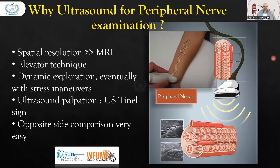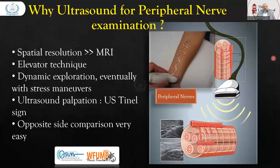Ultrasound palpation is another important feature, also called the ultrasound tunnel sign, in which we can palpate structures with the help of the transducer. A good sonographer will always feel that the probe is part of his hand, so he can easily palpate structures. Another important advantage is the contralateral side comparison — the opposite side can be assessed.